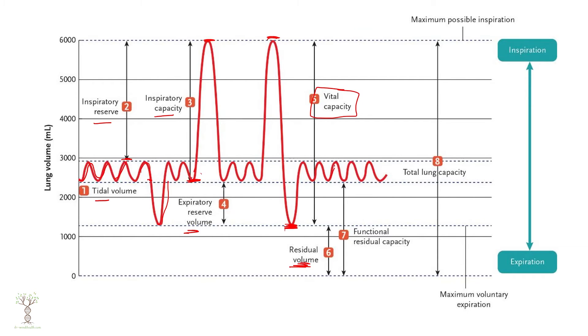After normal exhalation, the expiratory reserve plus the residual volume together form the functional residual capacity. When you add all volumes together — vital capacity plus residual volume — that gives the total lung capacity, which is around six liters for an average adult. Larger people have larger lung capacities; smaller people have smaller ones.